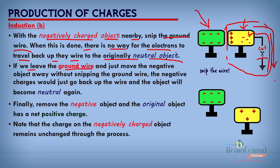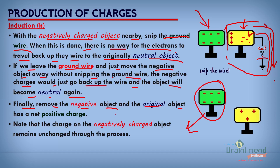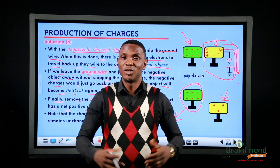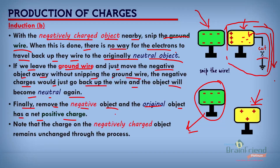Finally, the last step is to remove the negative object. The original object now has a net positive charge. We've been able to create a charge on a once neutral object using the induction method — no physical contact required. Note that the charge on our negatively charged object remains unchanged throughout the process — we started with six negative charges and end up again with six negative charges. There is no change on our initially negatively charged object.